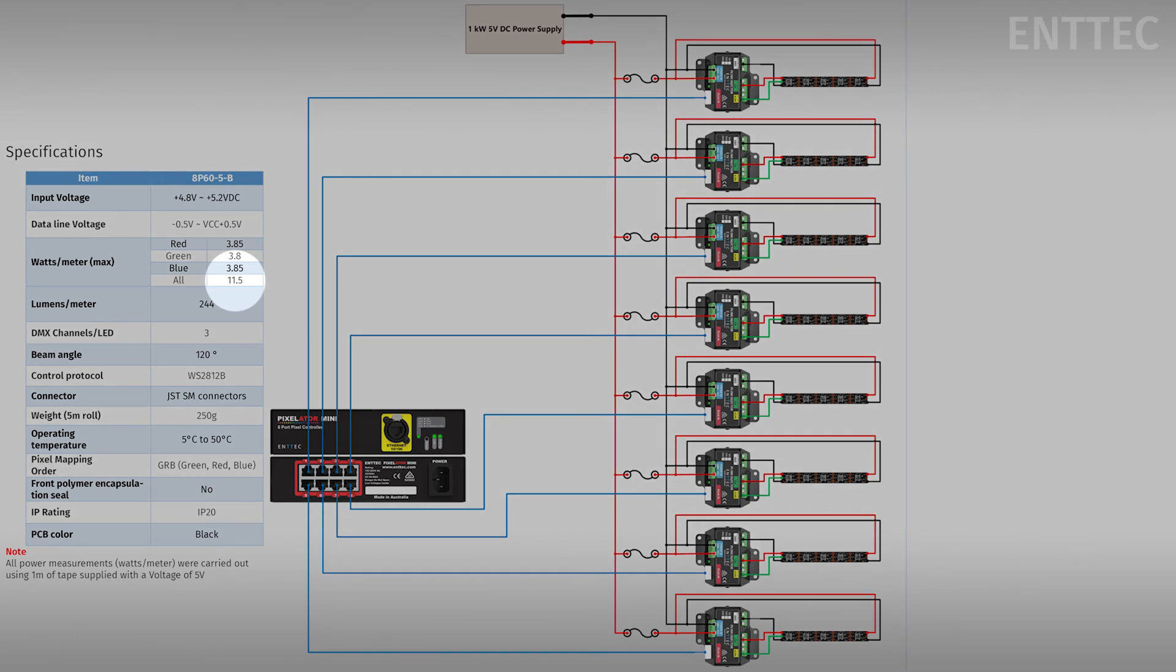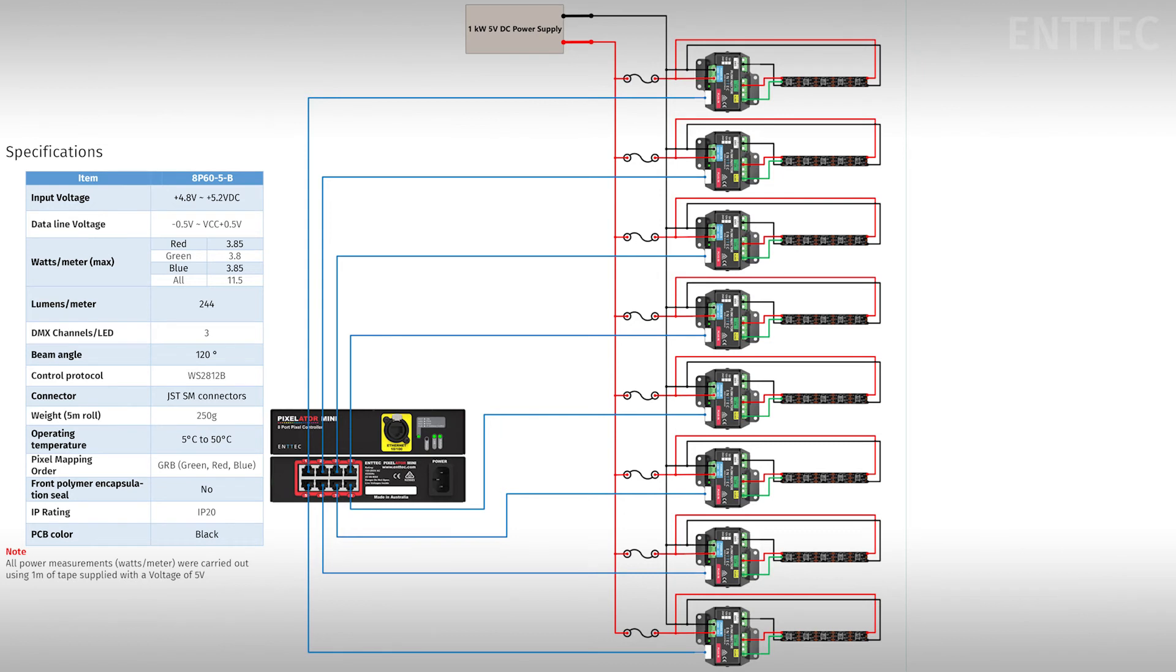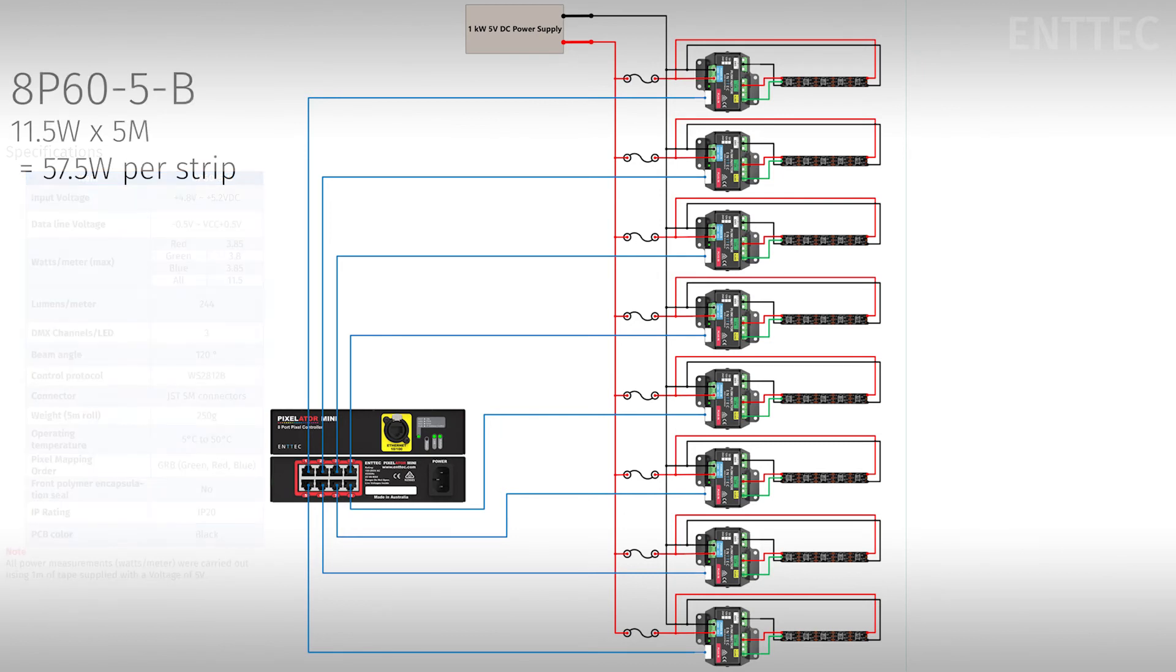So for each 5 meter section that we're powering, we would need to provide up to 57.5 watts. For 5 volt tape, this means a max current output of 11.5 amps. So our fuses should be rated to this current.